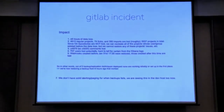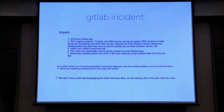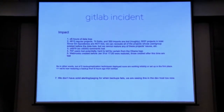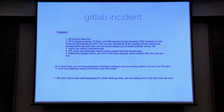All of this was pretty transparent, and everything that was happening was being live streamed, so we had a pretty good sense of what was going on. It was a fair bit of an impact for GitLab. They lost six hours of data, and the most glaring thing I noticed was that they had five backups and replication strategies in place, and none of them worked at the critical moment.